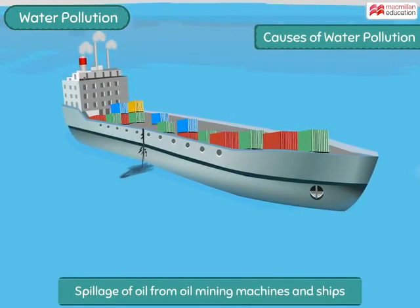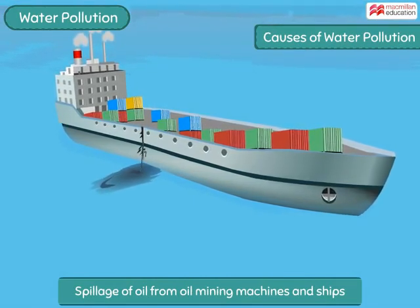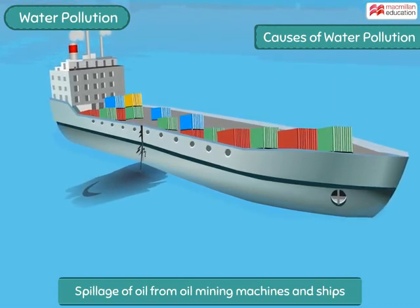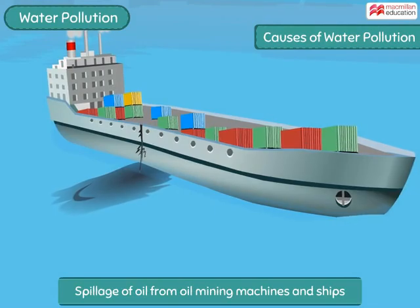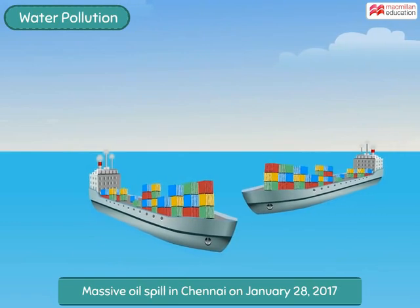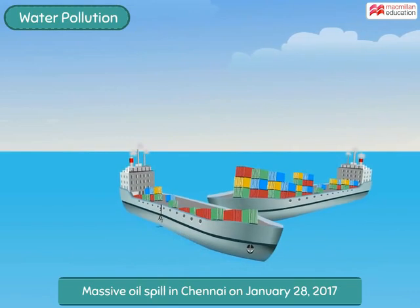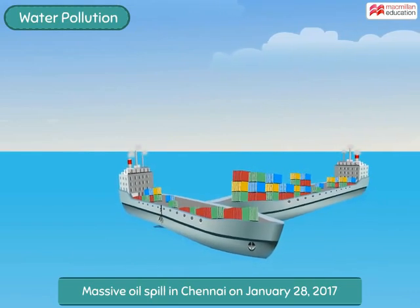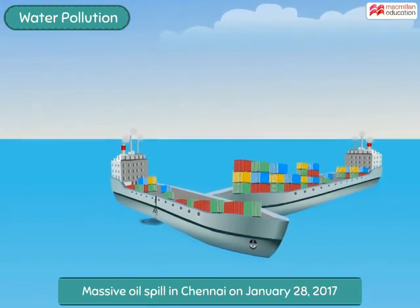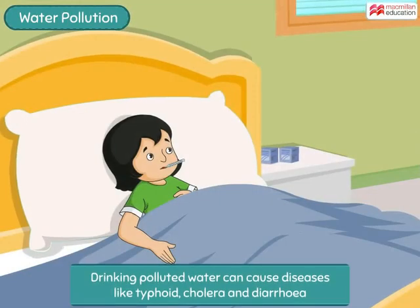Accidental spillage of oil from oil mining machines into the sea and oil-carrying ships is a growing cause of water pollution. On January 28, 2017, two cargo ships collided off the coast of Chennai, causing a massive oil spill into the sea. This caused a lot of damage to aquatic plants and animals.